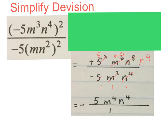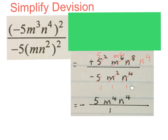This leaves me with my final answer. Plus divided by minus is a minus, with 5m to the power of 4 and n to the power of 4 on top, and 1 times 1 times 1 on the bottom — which you can leave out of your final answer. Just to remind you: don't forget your placeholder 1's during working, but you can leave the 1 out of the final answer at the bottom.